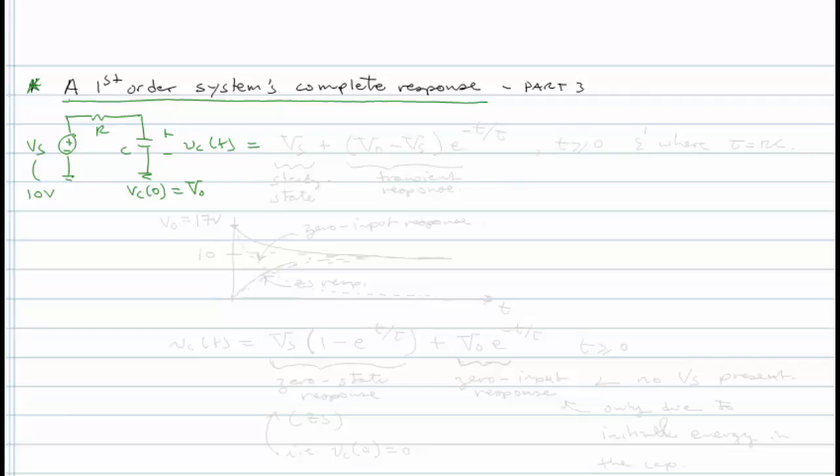VS plus VO minus VS times E to the minus T over tau. Valid for T greater than or equal to zero and where tau is equal to RC.